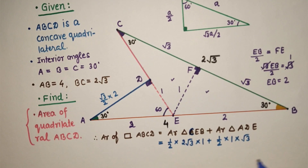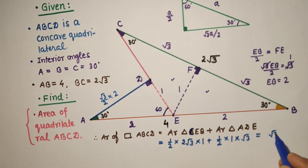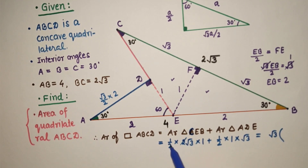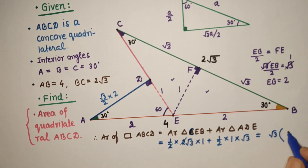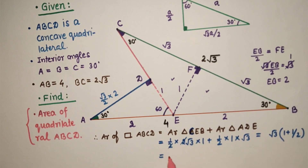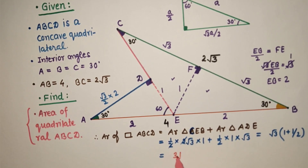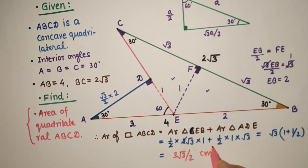So the total area is root 3 plus root 3 by 2. Taking root 3 as common factor: root 3 times 1 plus 1 by 2, which is root 3 times 3 by 2, which equals 3 root 3 by 2 square units. And that is the answer.